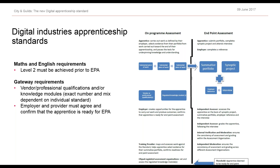A little more detail about what the new digital standards comprise. There's a clear distinction between on-programme elements and the endpoint assessments — that thick black line is effectively the gateway to the endpoint assessment. That gateway is the point where the apprentice, provider and employer agree that the apprentice is ready and able to take the endpoint assessment. Prior to that, the employer must ensure that the work the apprentice is doing is sufficiently stretching to develop them, fully engage them in their work role, and gather the evidence for the summative portfolio.